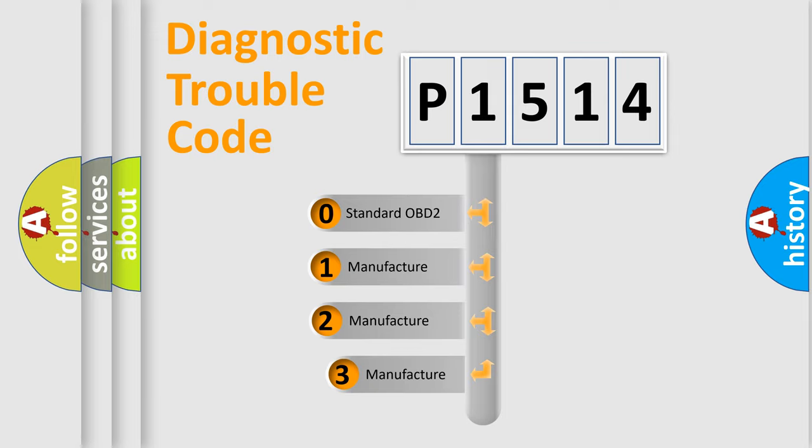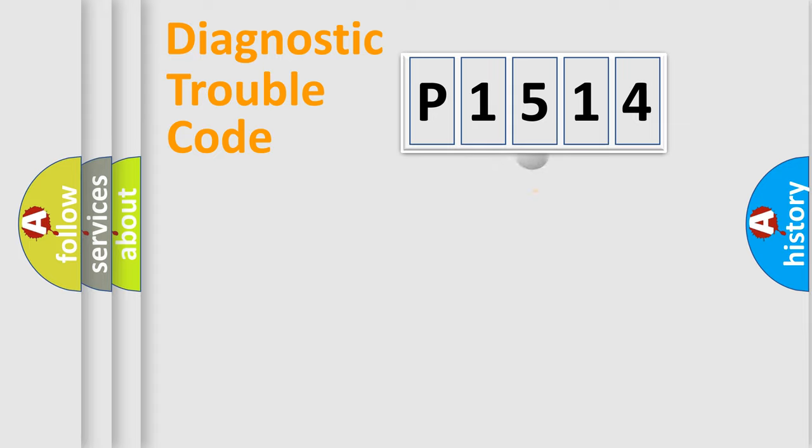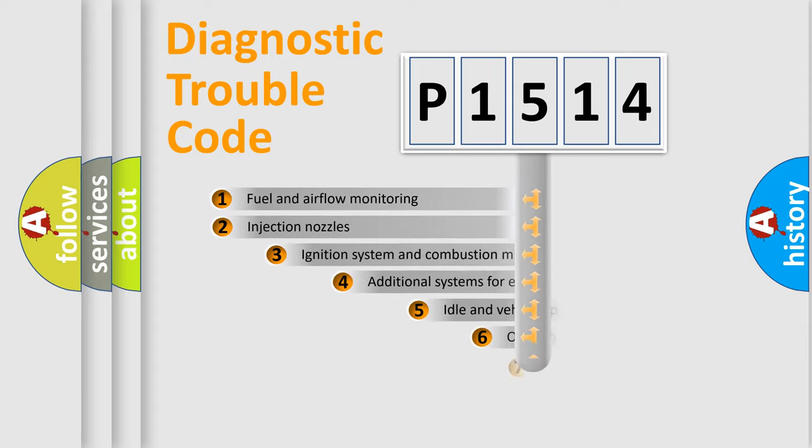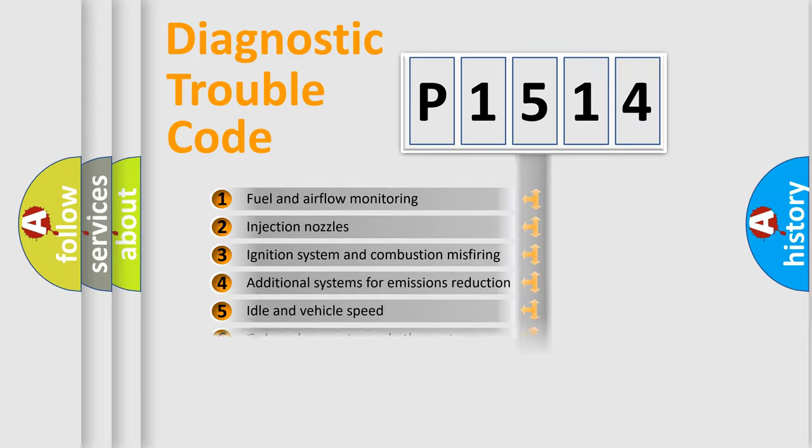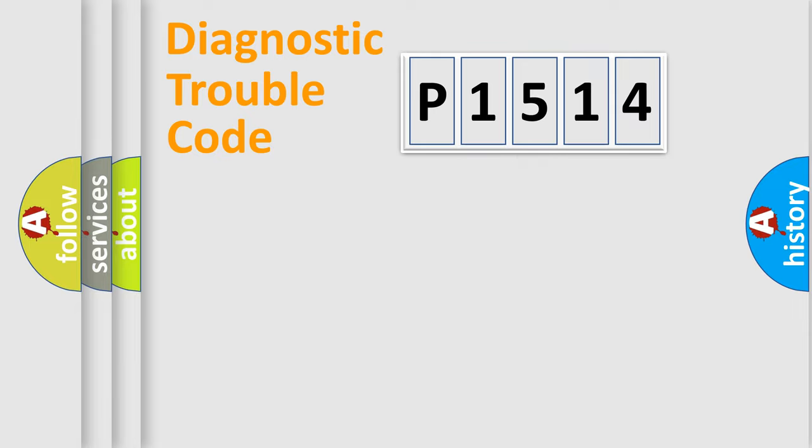If the second character is expressed as zero, it is a standardized error. In the case of numbers 1, 2, or 3, it is a more precise expression of the car-specific error. The third character specifies a subset of errors. The distribution shown is valid only for the standardized DTC code.